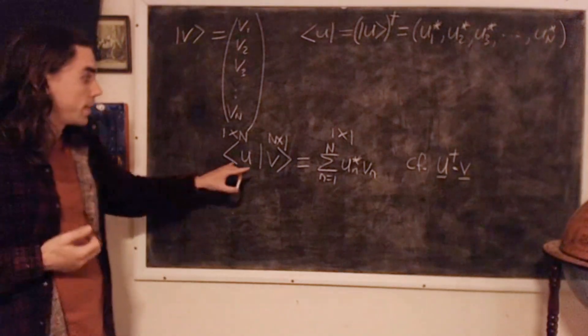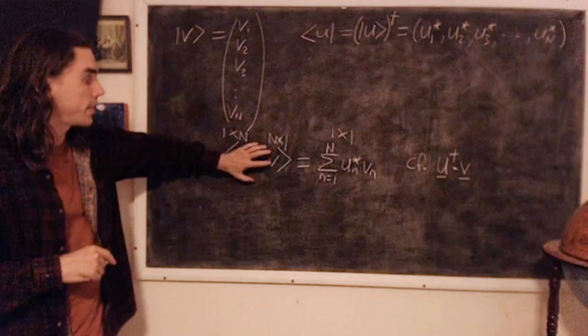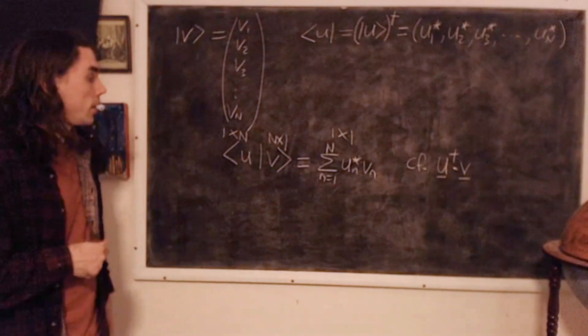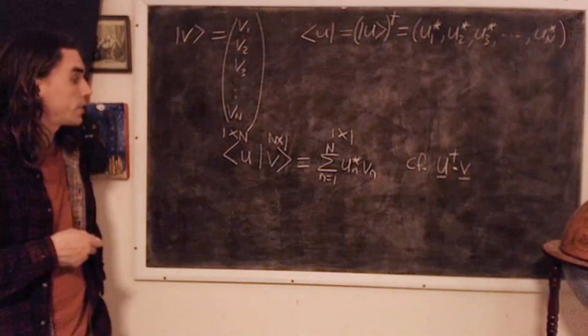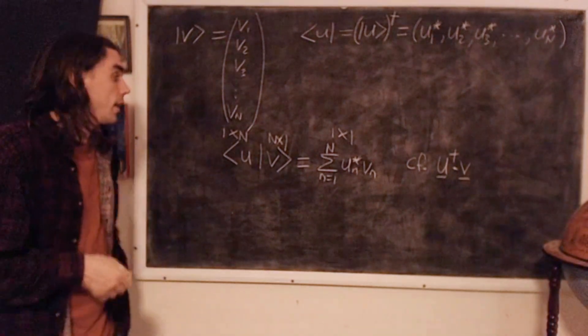A particular convenience of this notation, though, is that if we want to look at the complex conjugate of this, so remember this thing, bracket is a complex number, a complex scalar. If we take the complex conjugate of that, we just get the following.